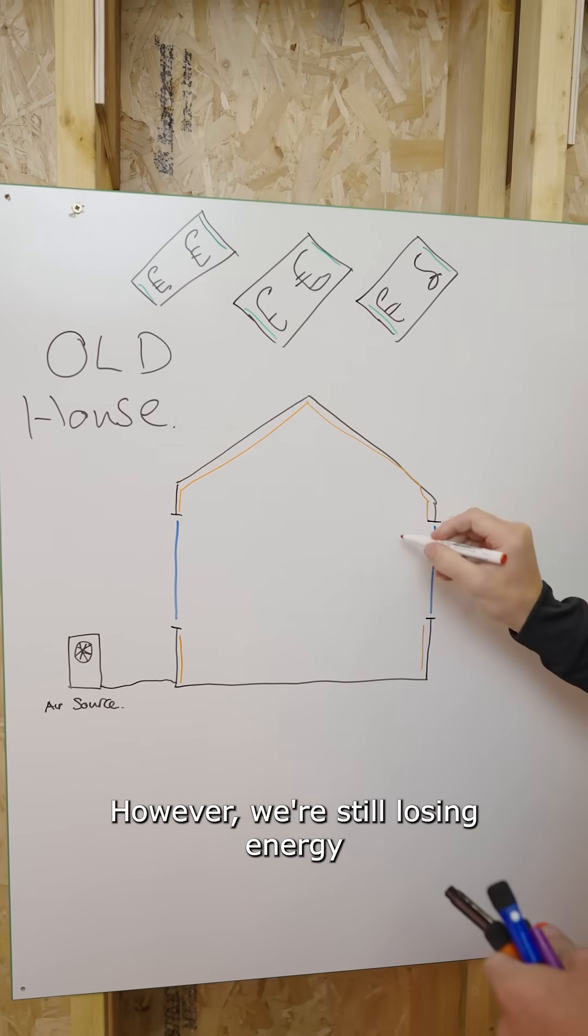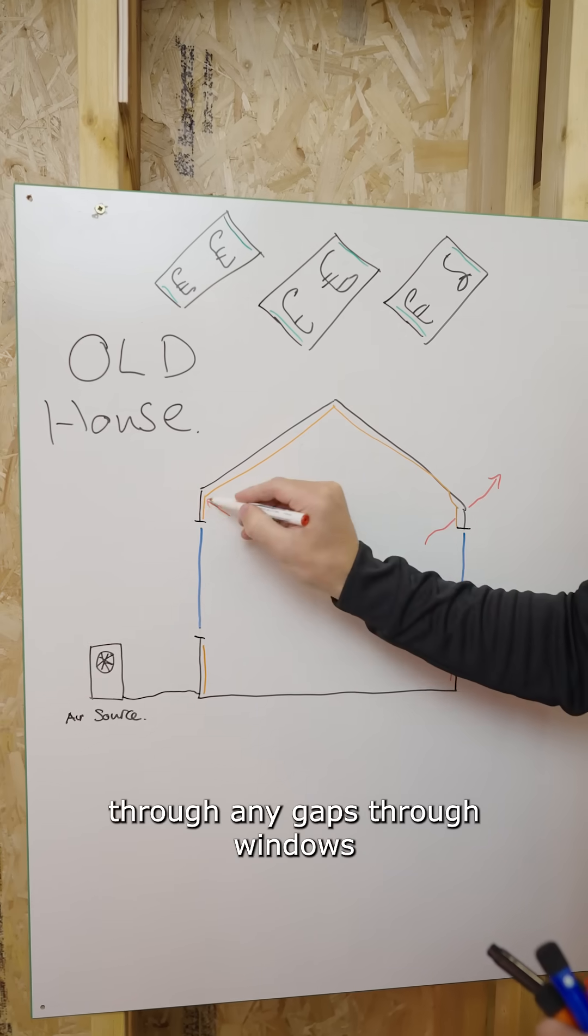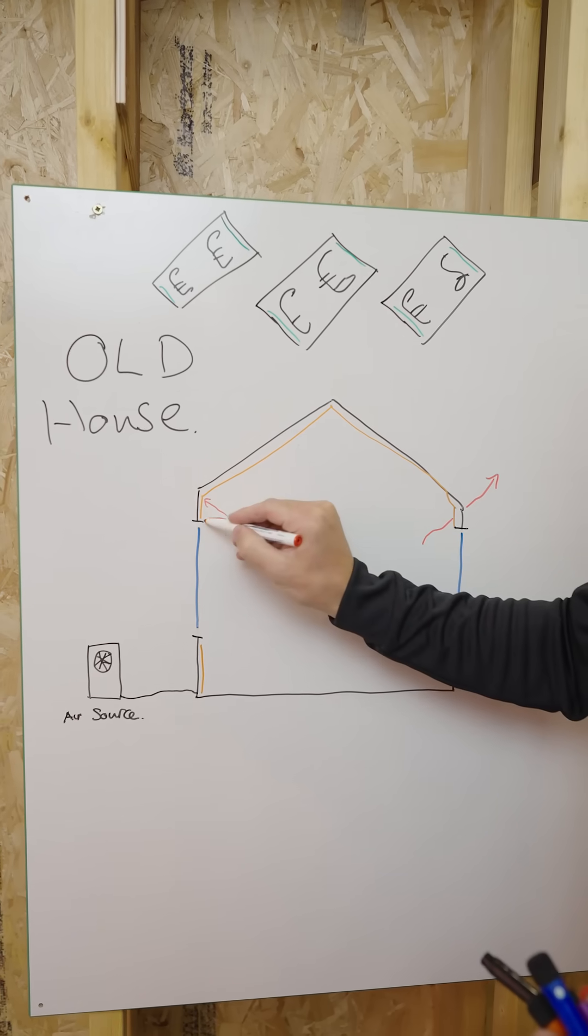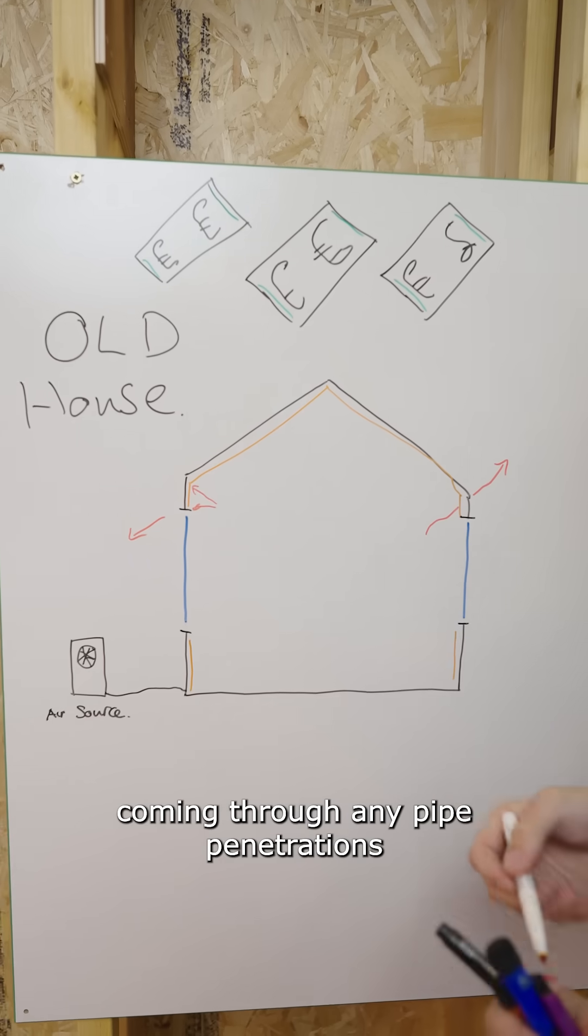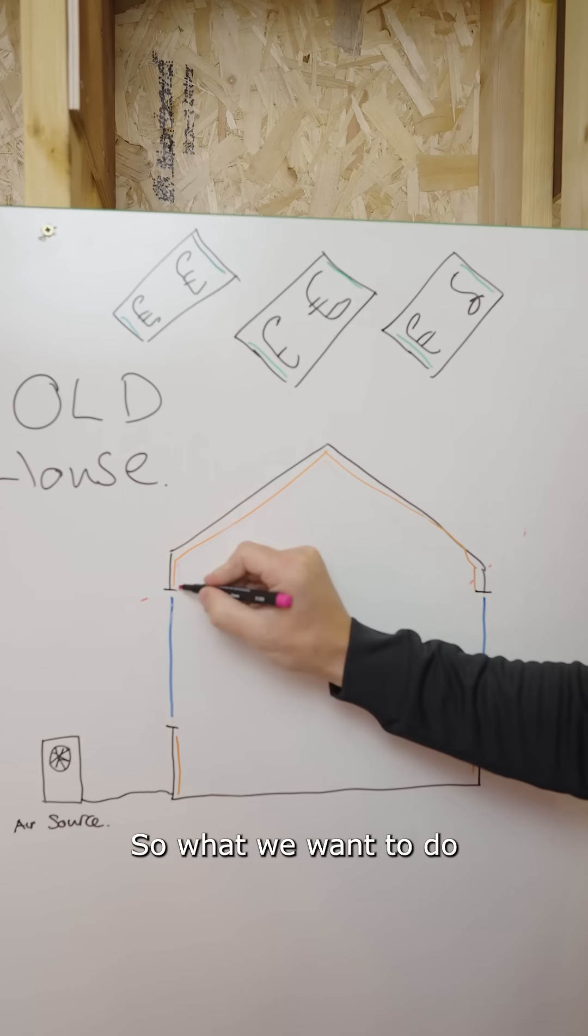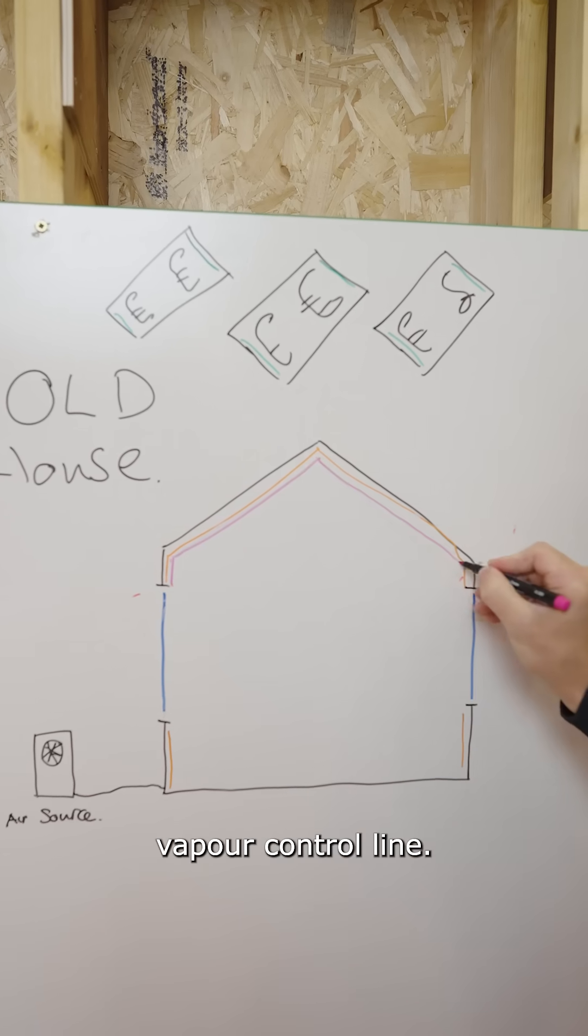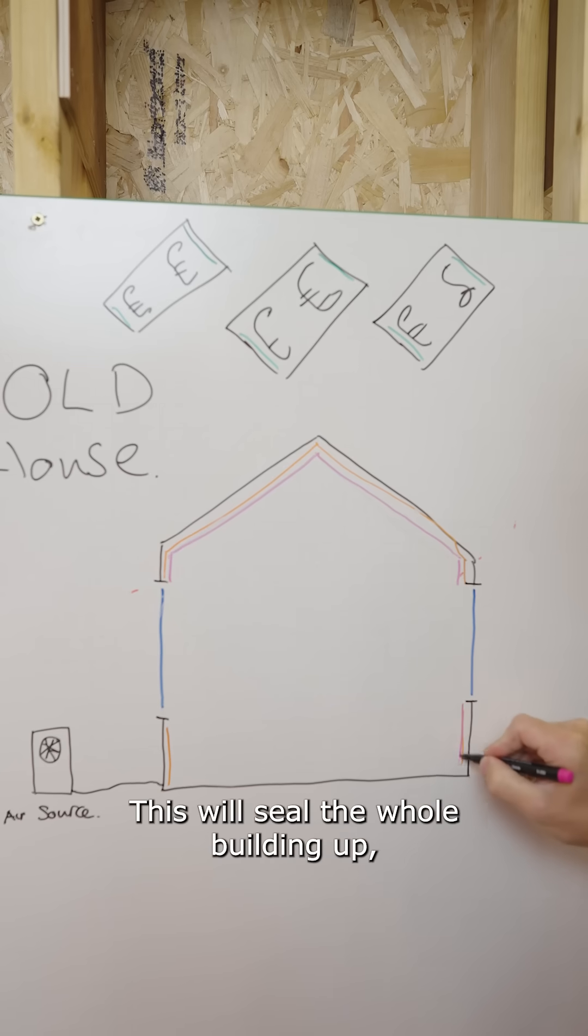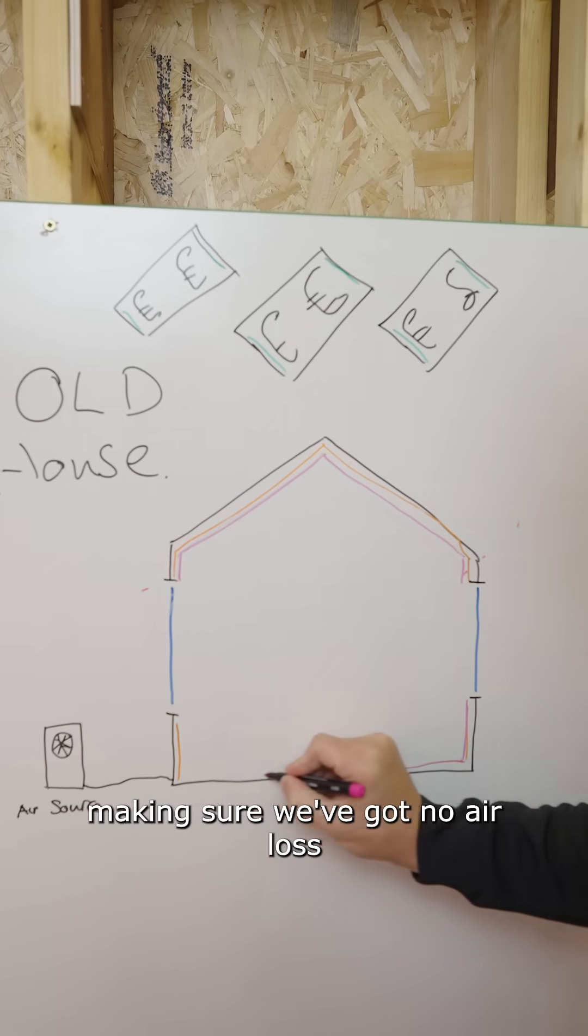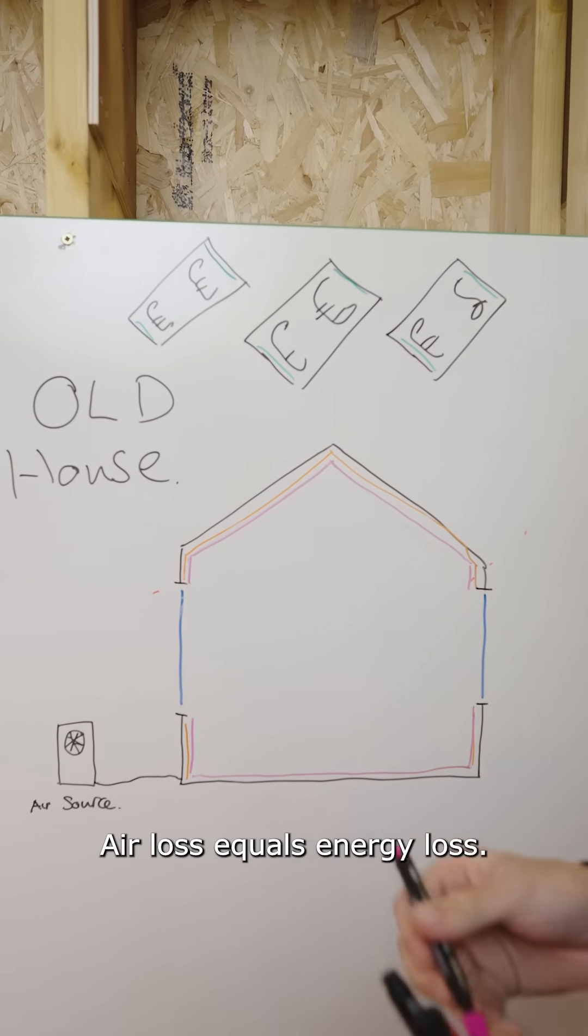However, we're still losing energy through air loss. This will be through any gaps, through windows, any pipe penetrations and the like. So what we want to do is add our nice purple paper control line. This will seal the whole building up, making sure we've got no air loss. Air loss equals energy loss.